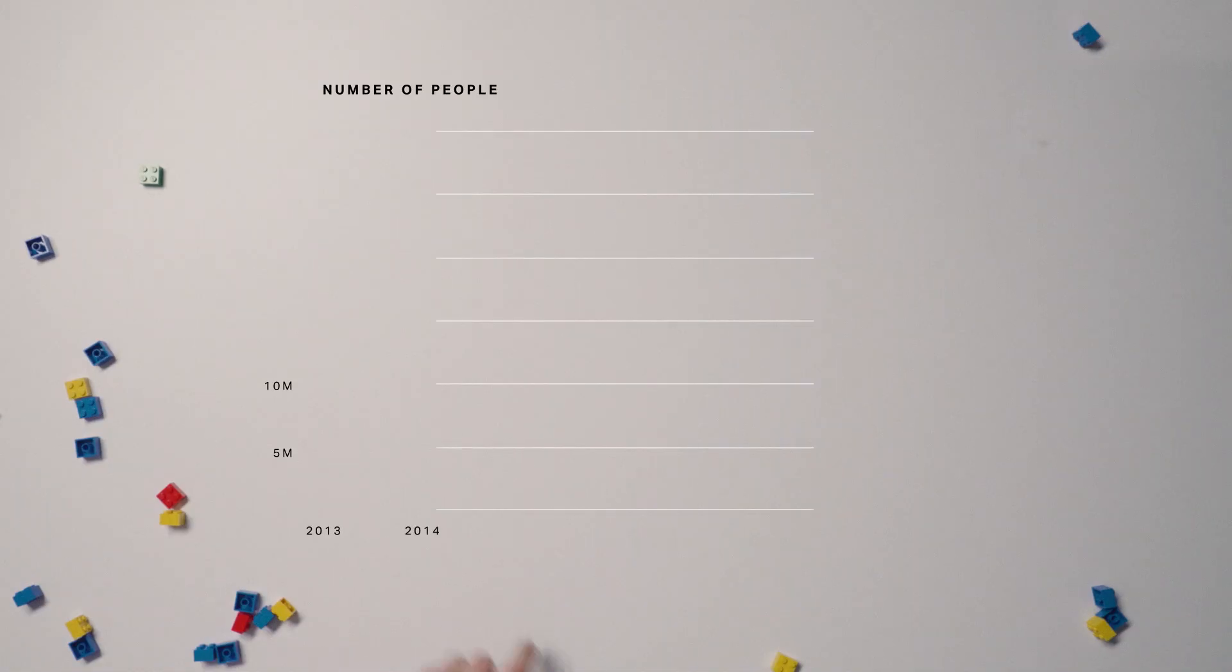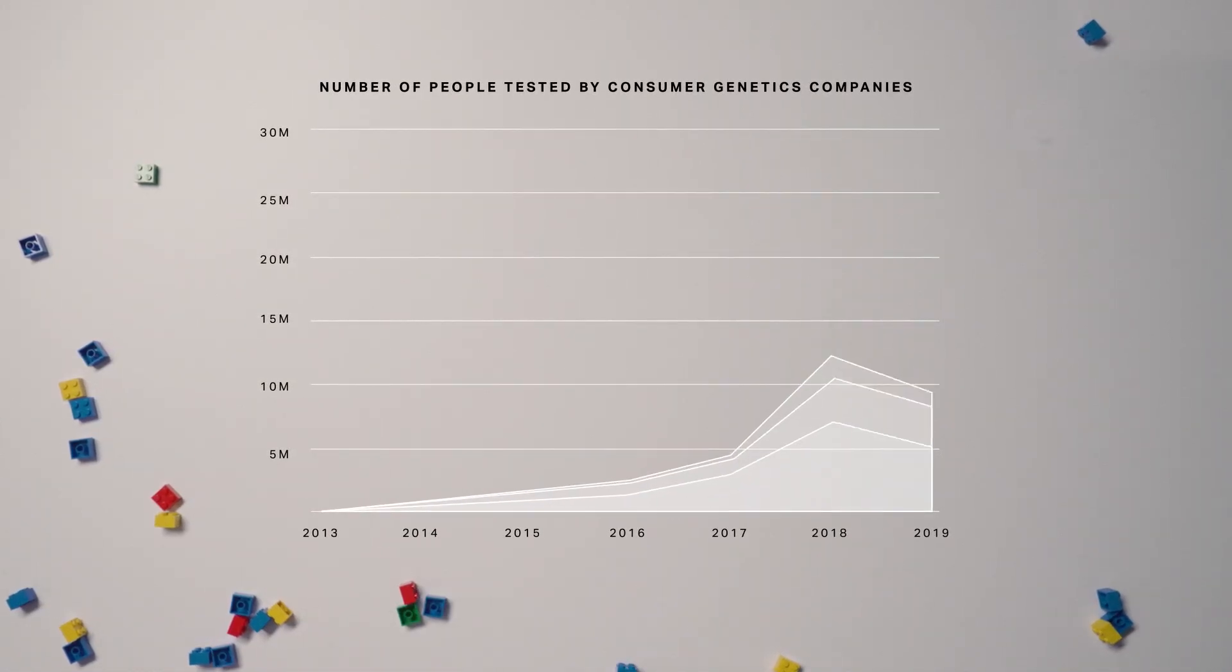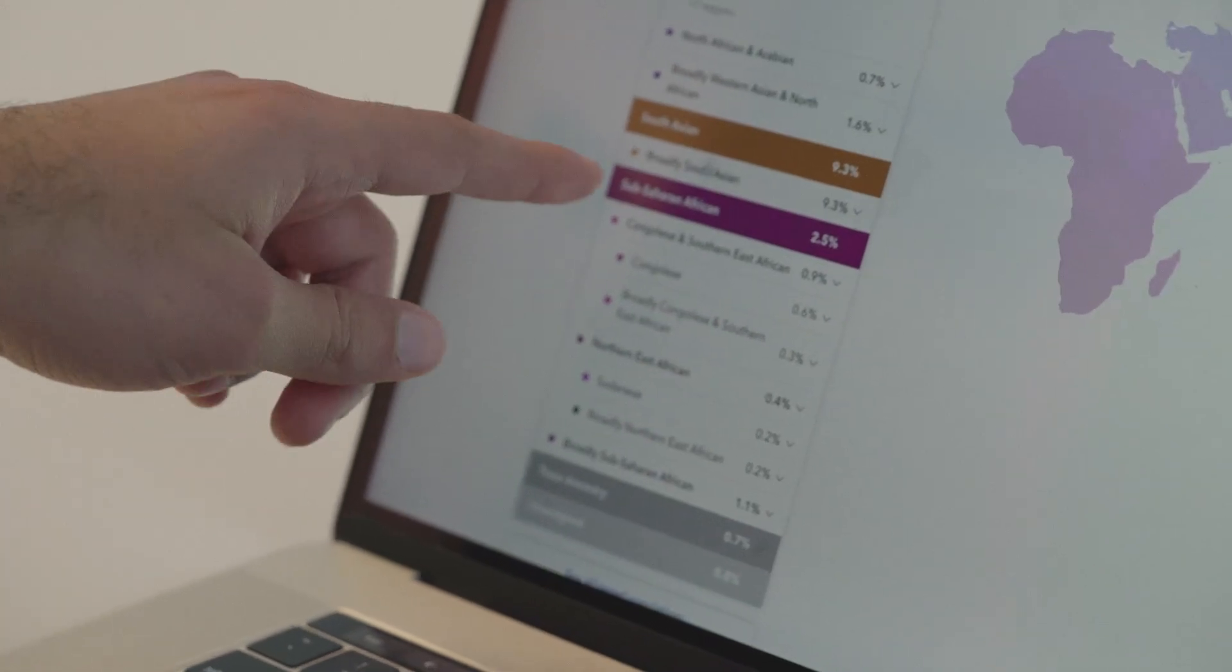Either way, at-home tests like 23andMe or AncestryDNA have exploded in popularity. By one estimate, around 26 million people have taken one of these tests. So maybe I should be worried about my privacy because my DNA is getting uploaded to some database somewhere.